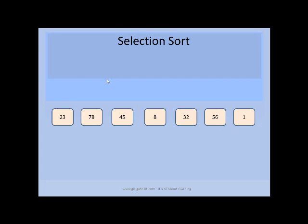We will start with the initial element which is 23. So 23 is the minimum element for the first case. Proceeding further, our goal will be to compare 23 with 78, 45, 8, 32, 56, and 1, until we find the next smallest element which is lesser than 23.